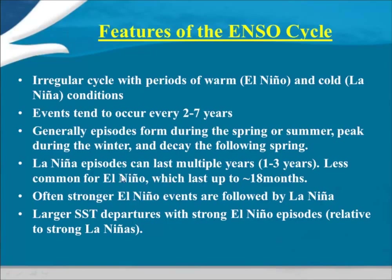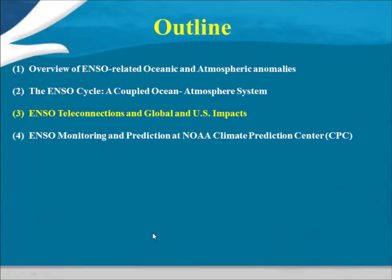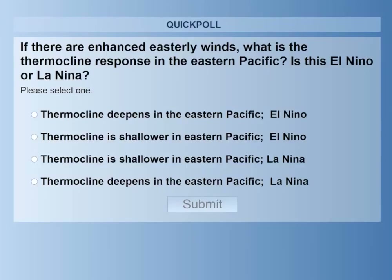Episodes generally form during the spring or summer — though that's not a strict rule — peak during the winter, and decay during the following spring. La Niña episodes can last multiple years, with a maximum of about three years observed. El Niño's maximum duration is around 18 months. Stronger El Niño events are often followed by La Niña — about 50% of the time in our 60-year record. There's also an asymmetry: stronger El Niño episodes tend to have a greater departure from climatology compared to La Niña episodes.